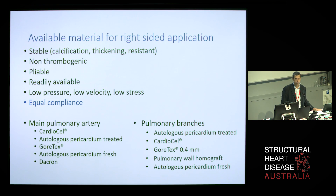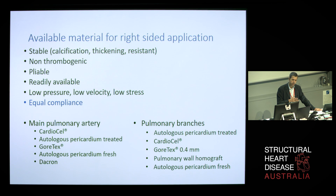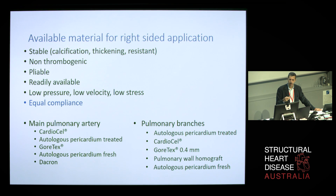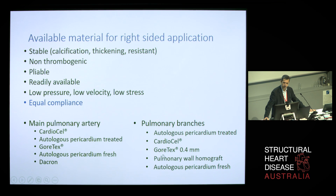In the main pulmonary artery and the pulmonary branches, the range of tissue is slightly different, but it is quite wide. Dacron tissue is mostly used and has been used in the past — not very much now — mostly for the main pulmonary artery. It is very rigid and has a tendency to develop very significant stenosis. The pulmonary branches are a very difficult issue in pediatric cardiac surgery. Neonates are extremely frustrating to work on for the branch pulmonary arteries, and the result is often unpredictable, with an extremely high re-operation rate. The best material for pulmonary artery branches in neonates would be the Gore-Tex 0.4 mm and the autologous pericardium fresh.